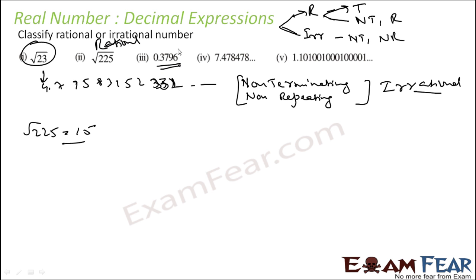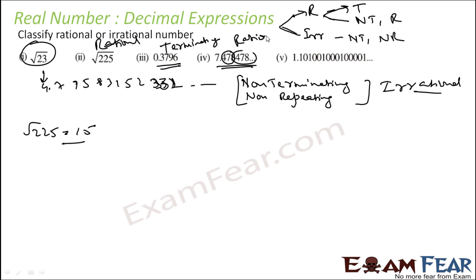Next: 0.3796 — looking at this expression, I can say it is a rational number. Why? Because it is terminating. Next: 7.478478... — this is non-terminating, but you see there is a repeat: 478, 478. So this is also a rational number, because it is non-terminating but repeating.